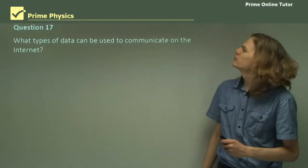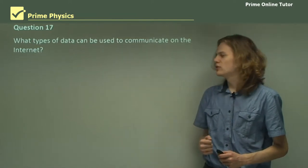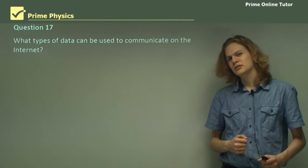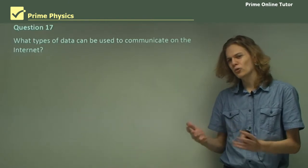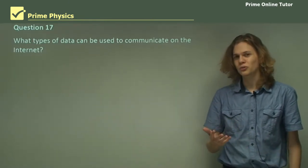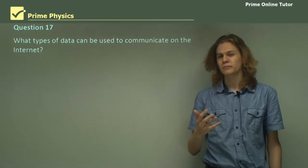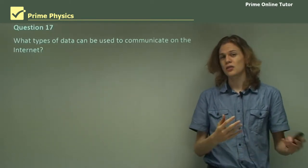Question 17. What types of data can be used to communicate on the internet? Well, remember, what does the internet send? Analog or digital data? Well, digital, right? So, anything that can be represented as digital data, ones and zeros, can be sent through the net.